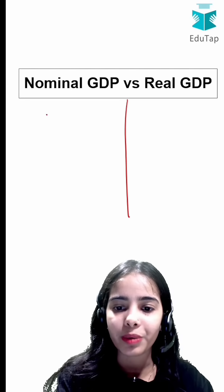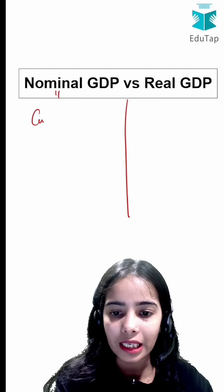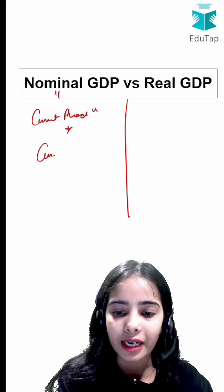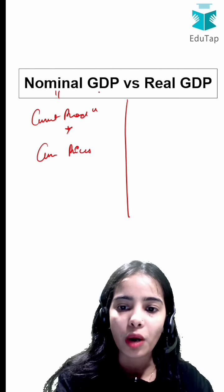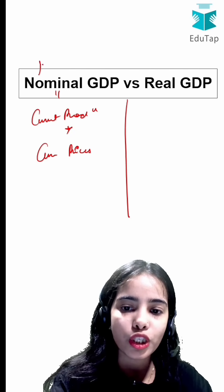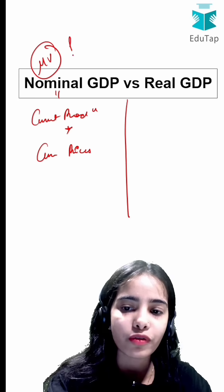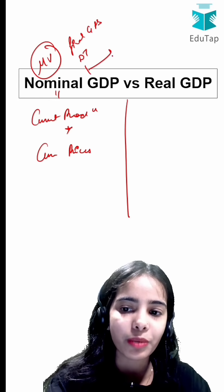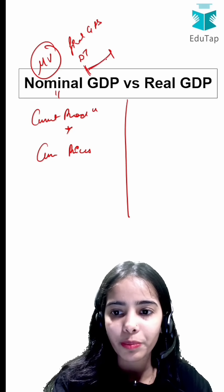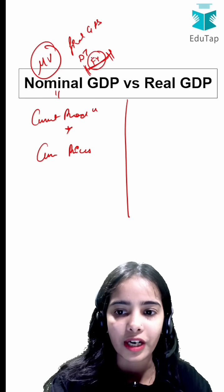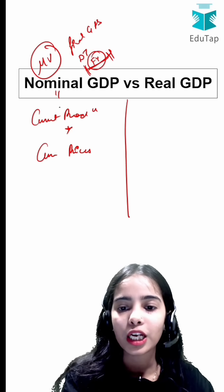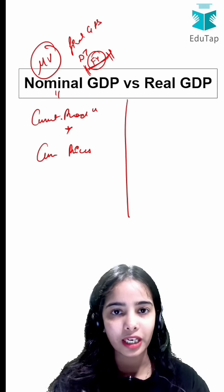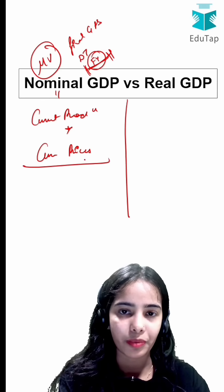Nominal GDP is calculated by taking the current production and multiplying it with the current prices. It shows the total market value of all the final goods and services that are produced in the domestic territory in a given period of time — usually a financial year. So nominal GDP equals current production multiplied by current prices.